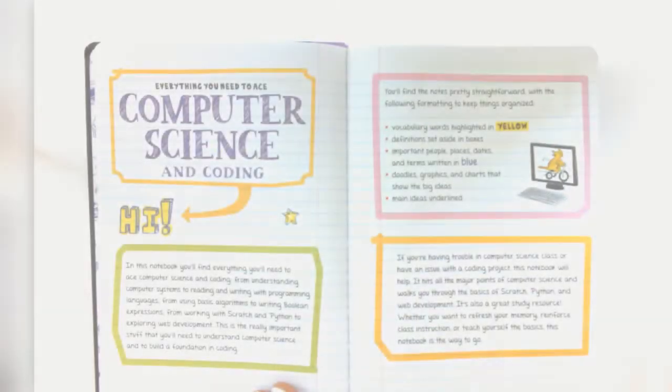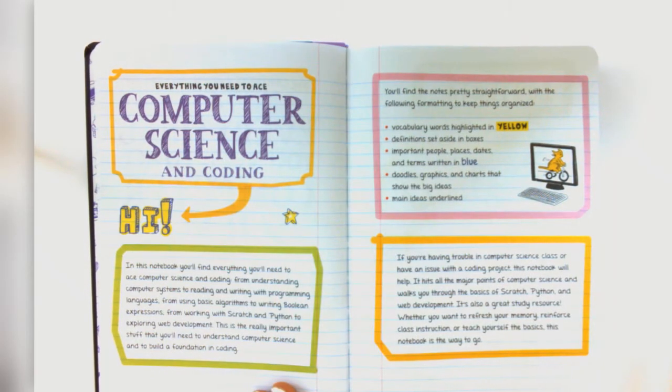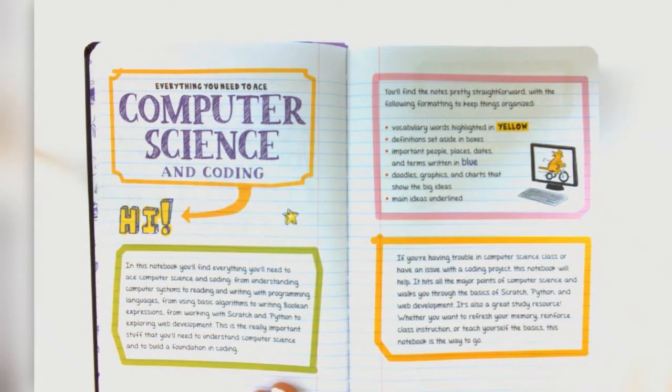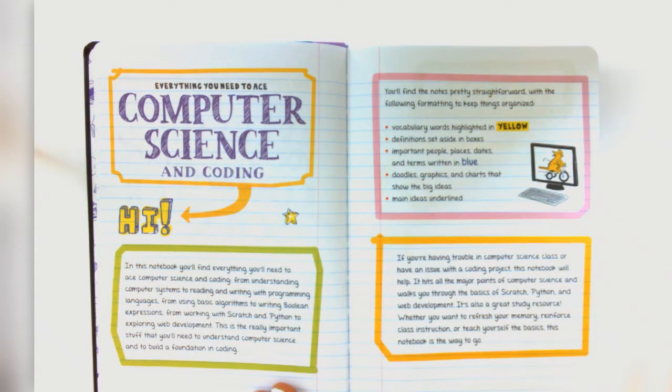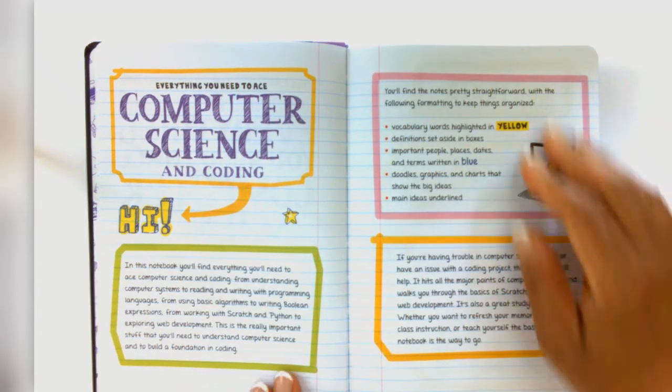So let's start with the introduction. Highlighted in yellow you have your vocabulary words, definitions set aside in boxes, important people, places, dates, and terms written in blue, doodles, graphics, and charts that show the big ideas, and the main ideas are underlined.